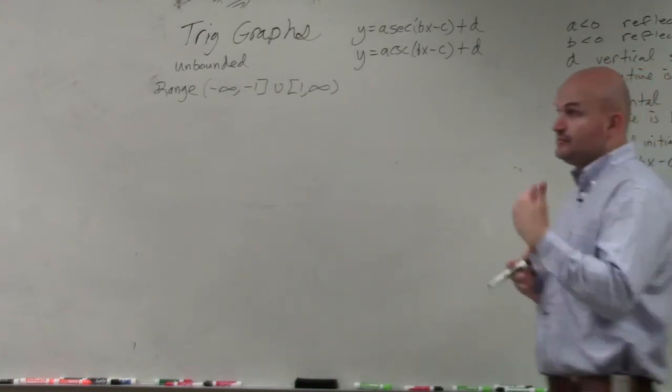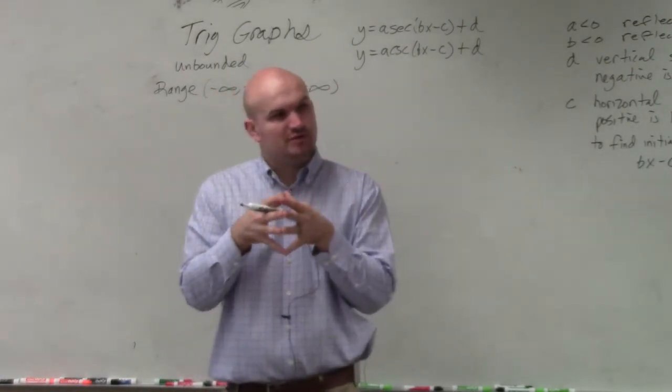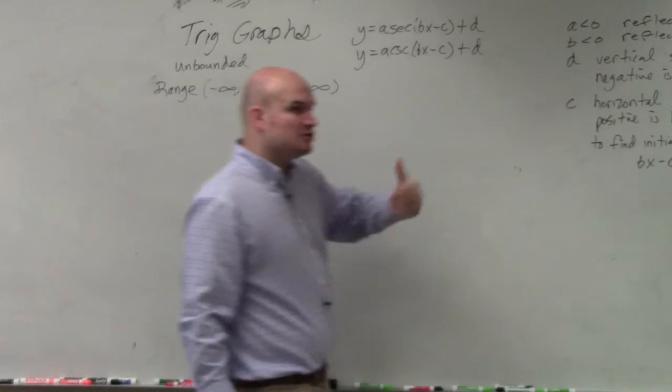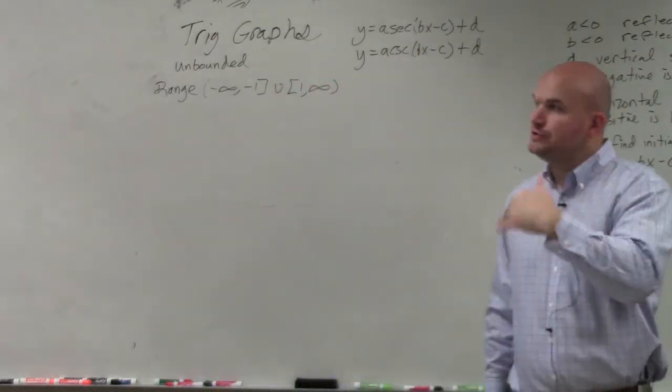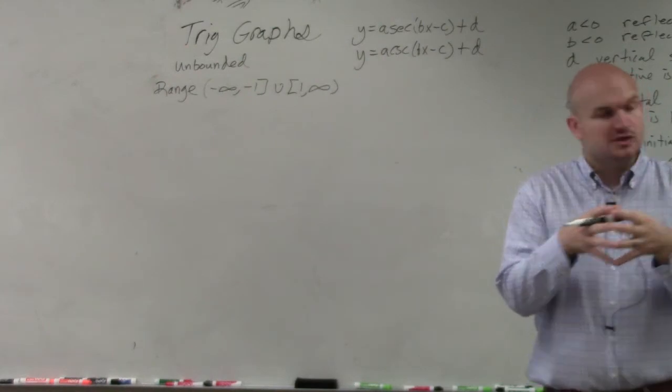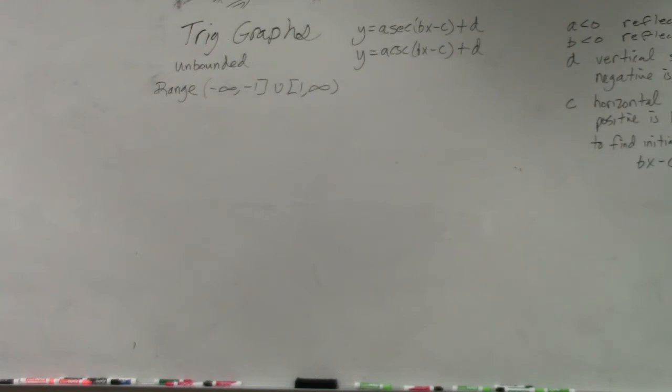The domain is going to be a little bit more confusing. If you guys remember what we looked at, let's just look at what we did for sine in this class. If you remember, the asymptotes occur for cosecant wherever sine is equal to 0. So if we look at this, when we did these graphs, we noticed that sine is equal to 0 at pi intervals apart.